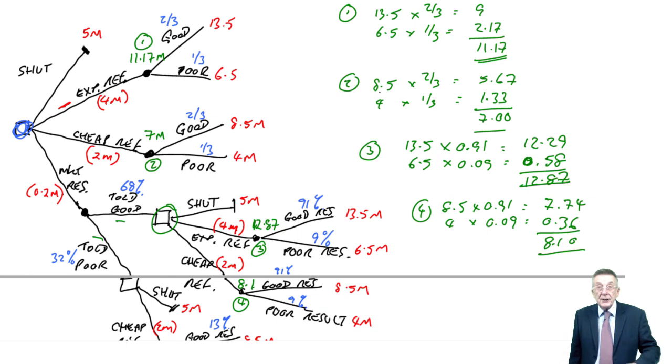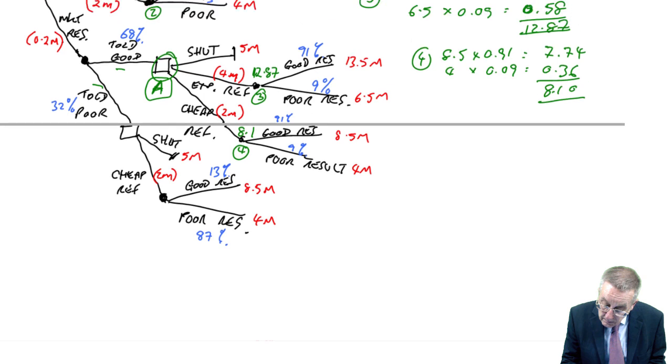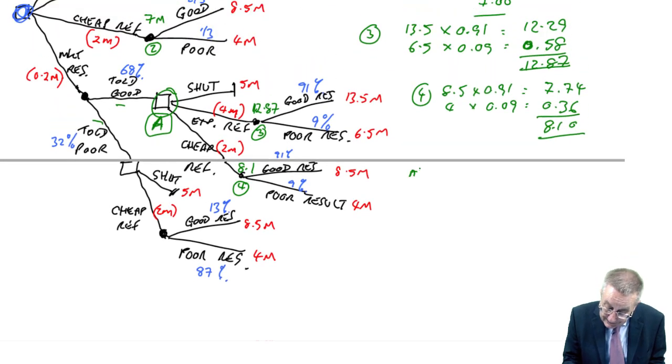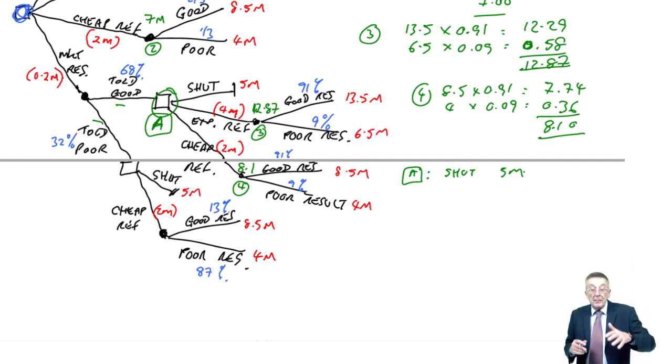Now, why am I doing this? Because I need to know what choice we'd make if we do market research and if we're told it's good. Well, now I can decide. If I label this A, box A, what is my choice? At box A, with the choice we're either shut, then we get five million. You know, we paid 0.2 million for the research, whatever happens. But when we paid that, we shut and get five million.